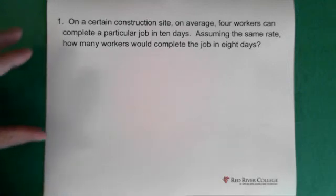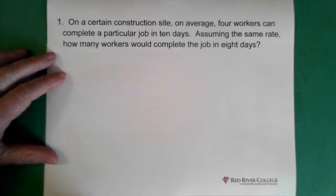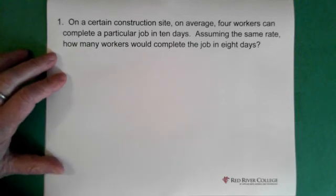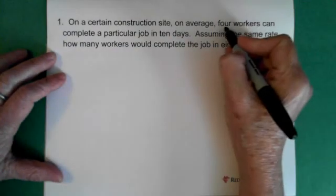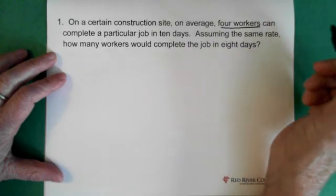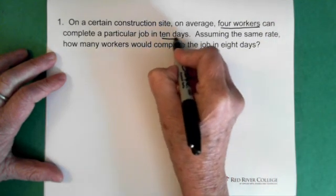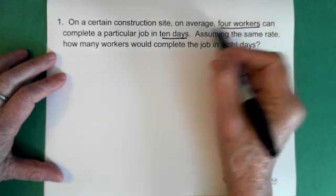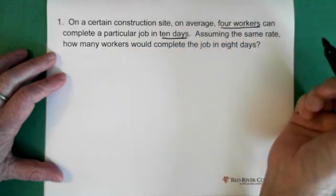Alright, so here we have a word problem on a certain construction site on average. Four workers can complete a particular job in 10 days. So these two are connected, the four workers and the 10 days.